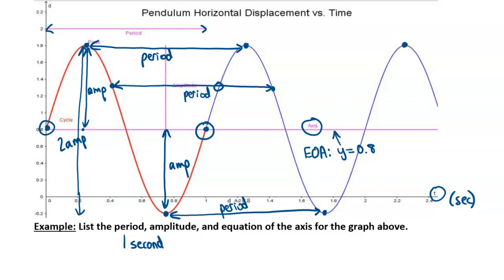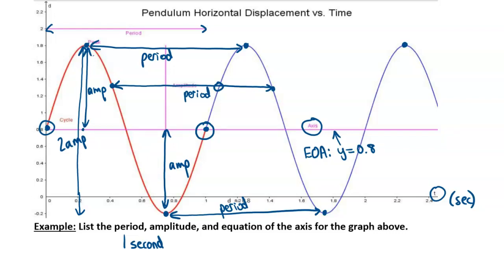The amplitude is the distance from the equation of the axis up to the peak or down to the trough. Going from 0.8 to 1.8 is a difference of one, and going from 0.8 down to negative 0.2 is also a difference of one. The amplitude is always positive, so the amplitude is one — if that distance is in meters, it would be one meter. The equation of the axis is y equals 0.8.